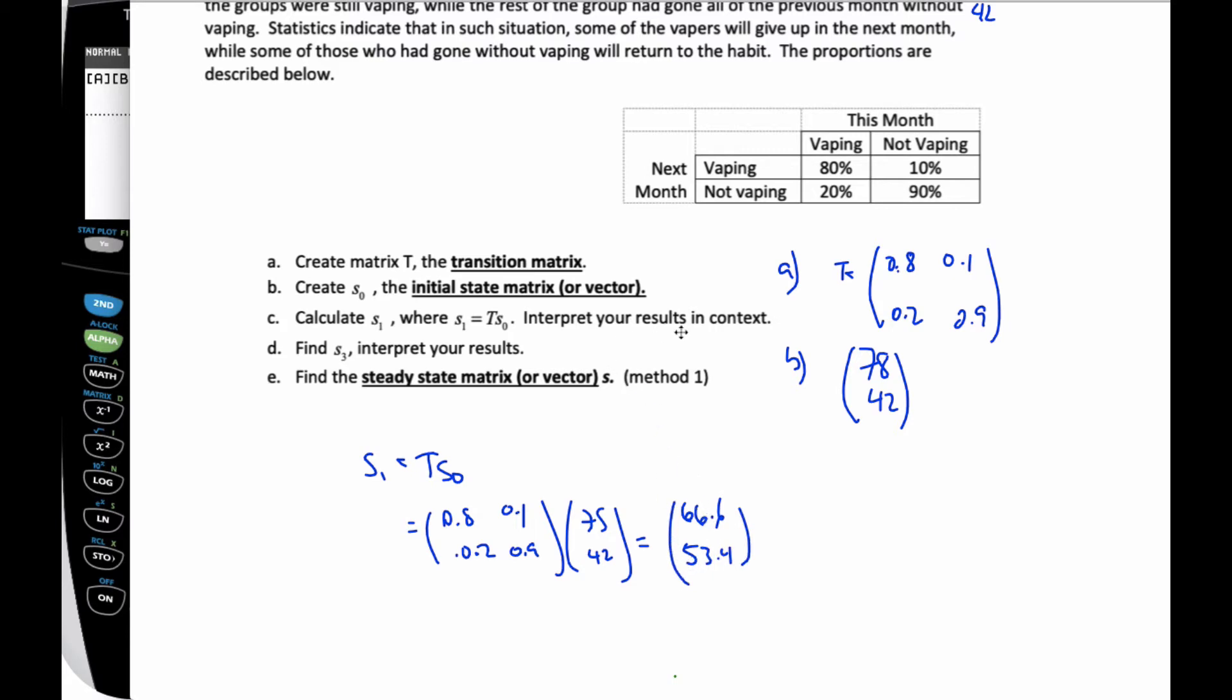And this is interpret your results. Well, what this means is approximately 67 of these members are vaping at the end of this month, and 53 are not vaping. Okay, that's what this means here.